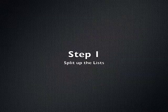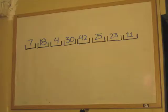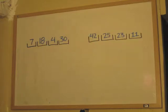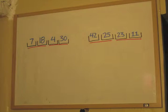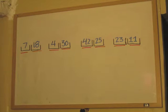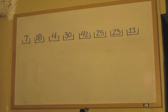Step 1: Split up the lists. This is the same list we sorted in the previous video. It is unsorted now: 7, 18, 4, 30, 42, 25, 23, and 11. Here I have underlined the two lists we will split this one into. Now they are split. Now I've underlined the lists within those lists. Now we have four smaller lists. Now you can see the smaller lists within those lists. Now we have eight lists, all with one number in them.